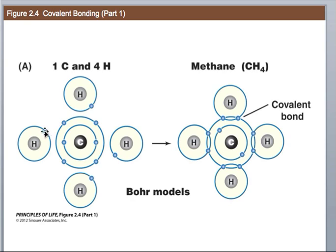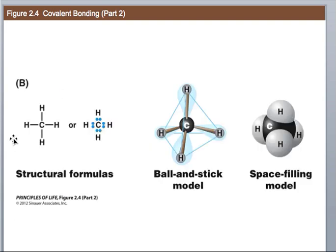They could satisfy that by getting one electron from this hydrogen and sharing, one from this hydrogen and sharing, and so on. The final molecule is called methane, CH4, and that's got covalent bonds between all those atoms. We don't bother to draw it up all the time. This is the way you're going to see it most of the time - a single line denoting that covalent bond between those atoms to make a molecule.